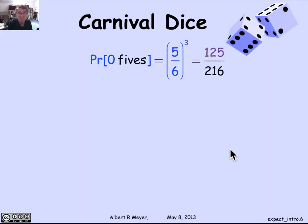Let's think about the probability of rolling no fives. If five is my favorite number, what's the probability I roll none of them? There's a 5 out of 6 chance I don't roll a 5 on the first die, and on the second die, and on the third die. Since the die rolls are assumed to be independent, the probability of no fives is (5/6)^3.